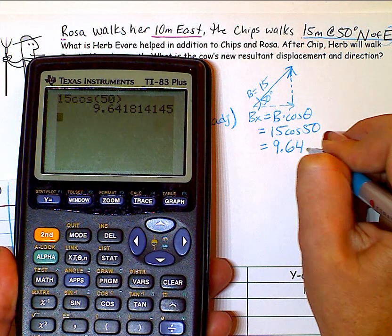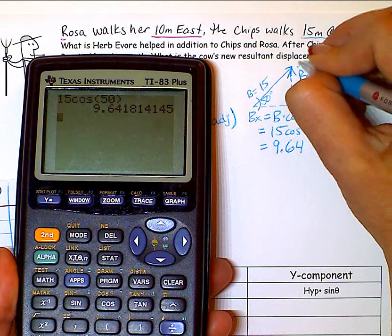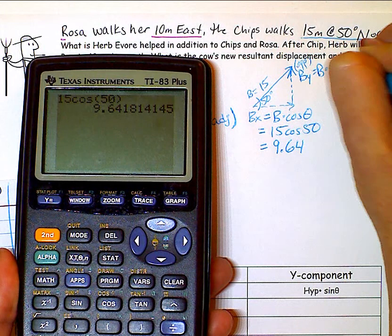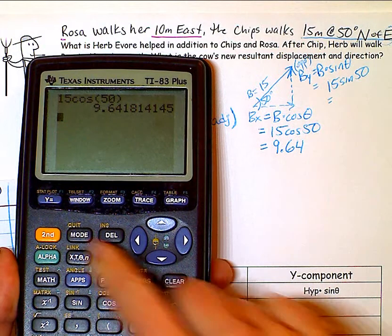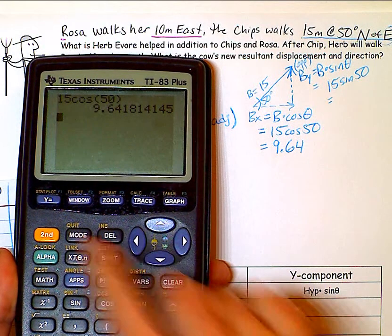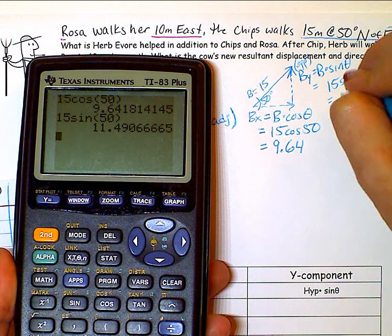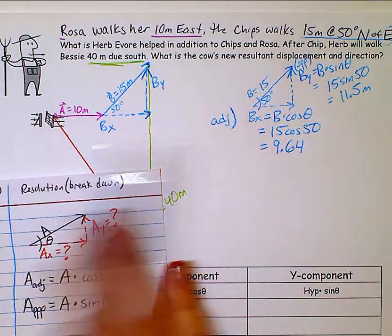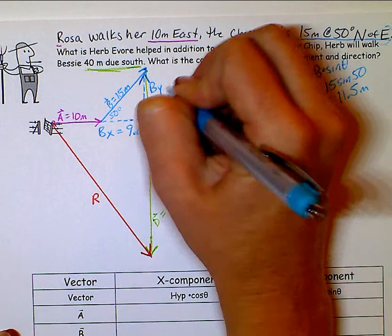9.6. In WebAssign you want to go ahead and use 9.64. And then the y. This is opposite. And so I'm using the sine version. 15 times the sine of 50. And it's 11.5. Let me go ahead and put this back on my pretty picture over here. Bx is 9.64 and By is 11.5.